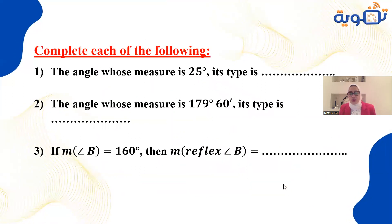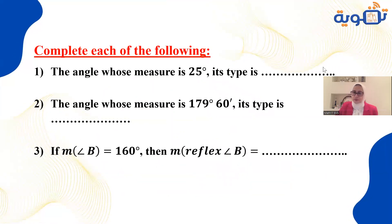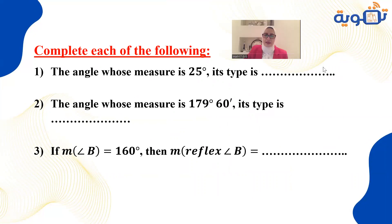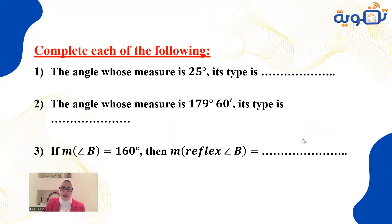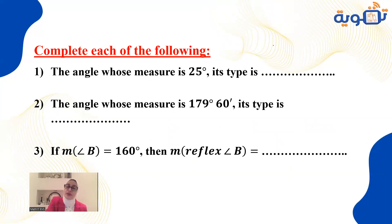Let's solve these questions together. The angle whose measure is 25 degrees — which type is it? It is greater than zero and less than 90, so it's an acute angle.